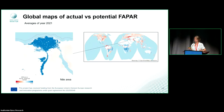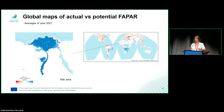We also looked specifically at areas of irrigation, where we expect the potential FAPAR to be lower than the actual because of the irrigation. Looking at the Nile area, you can really see that the model does pick that human pressure variable up and takes it into account.